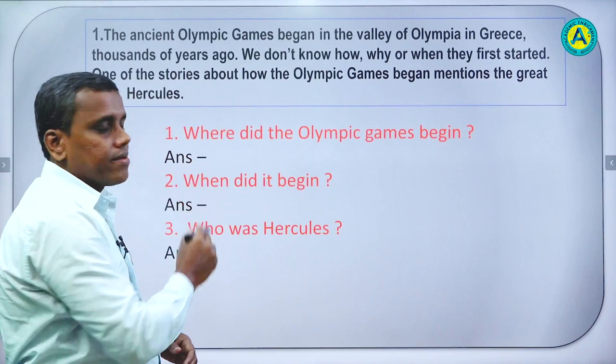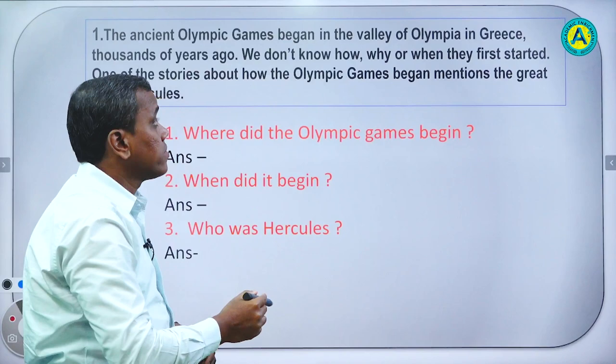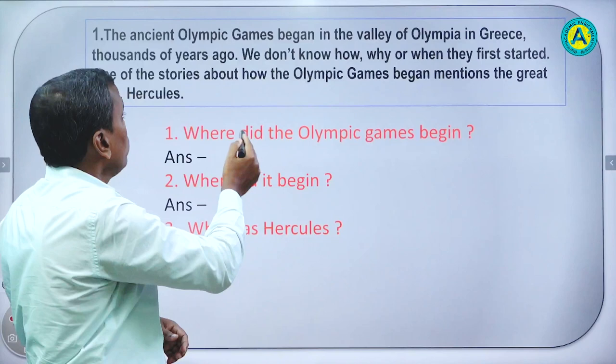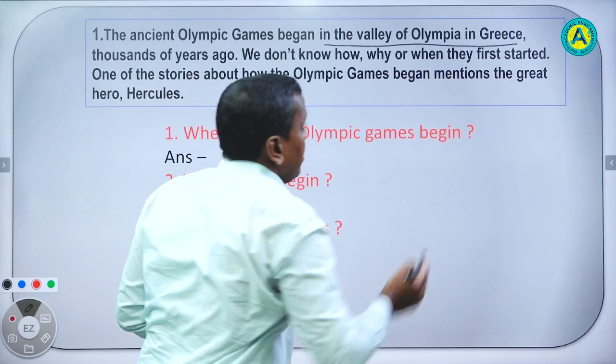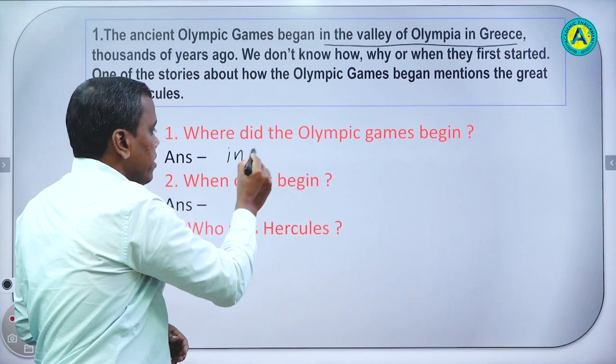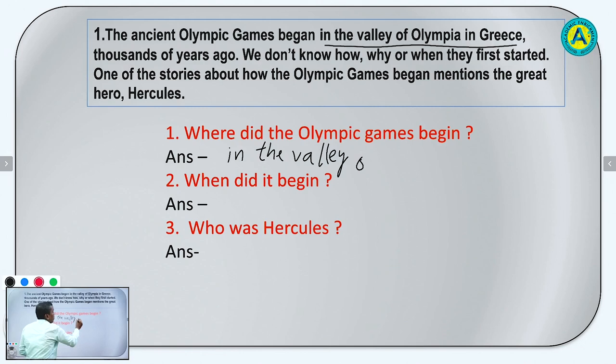Question number 1: Where did the Olympic games begin? We know it began in the valley of Olympia in Greece.